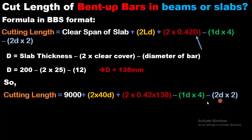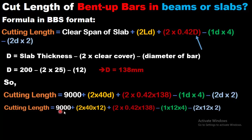Development length is generally taken as 40D for tension members like slabs and beams. For bend deductions: 1D is for a 45-degree bend and there are 4 of them; 2D is for a 90-degree bend and there are 2 of them, where D (small d) is the diameter of the bar, which is 12 millimeters. So the complete expression is: 9000 plus 2 × 40 × 12 plus 2 × 0.42 × 138 minus 4 × 1 × 12 minus 2 × 2 × 12.